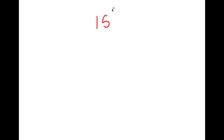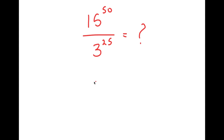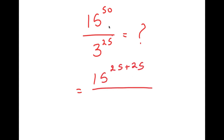In this video, I'm going to solve the problem 15 to the power of 50 over 3 to the power of 25. To solve this, I'm going to first start by rewriting this as 15 to the power of 25 plus 25, so we wrote 50 as 25 plus 25, over 3 to the power of 25.